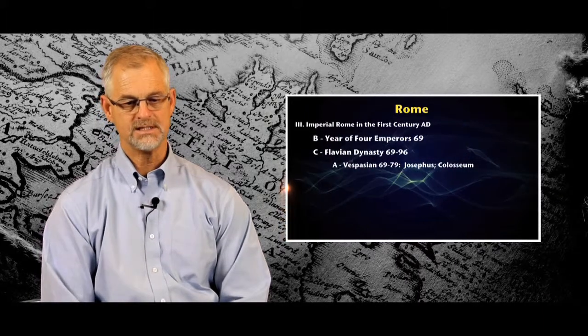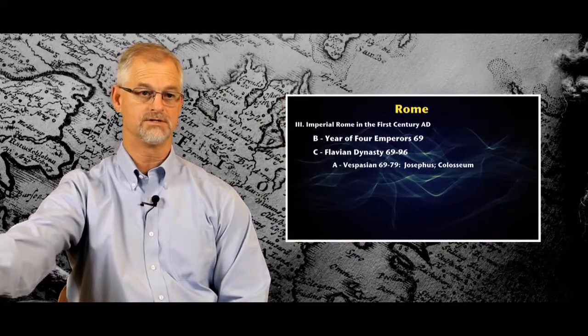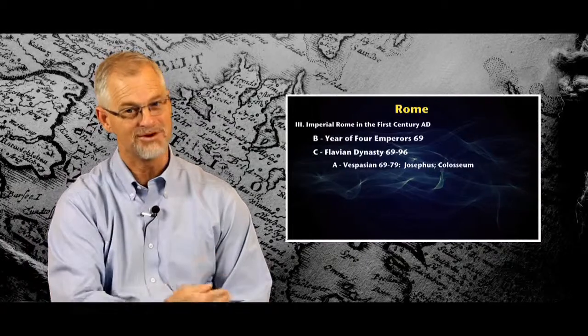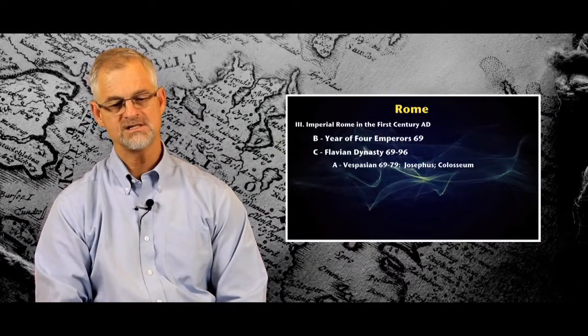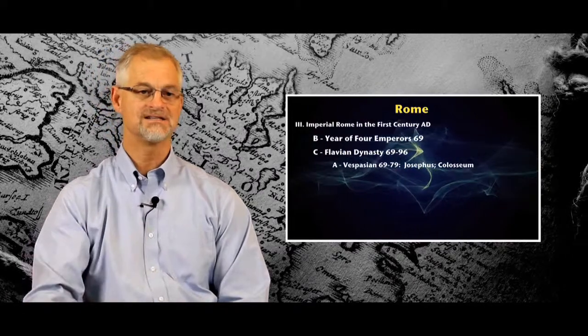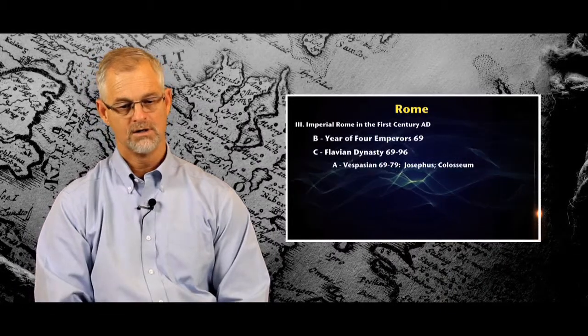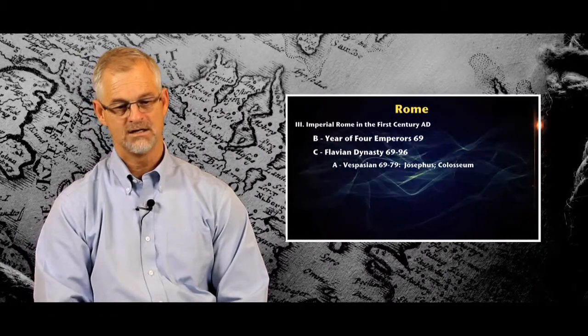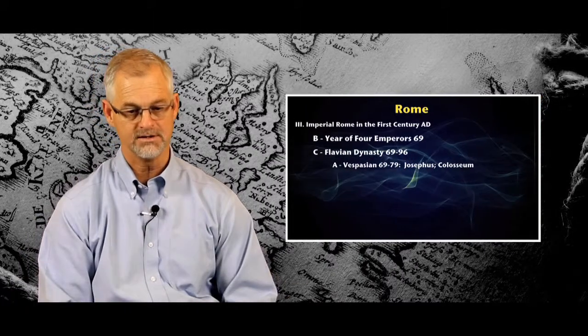Vespasian was the general who initially put down the Jewish revolt in Israel, but he left before it was over in order to become emperor, to claim his position as emperor. He left behind his son, and it was his son Titus who in fact sacked the city of Jerusalem, destroyed the temple, this in the year 70, a very important year for New Testament, the year 70 AD, the sack of Jerusalem and the destruction of the temple. And that temple, of course, has never been rebuilt since.